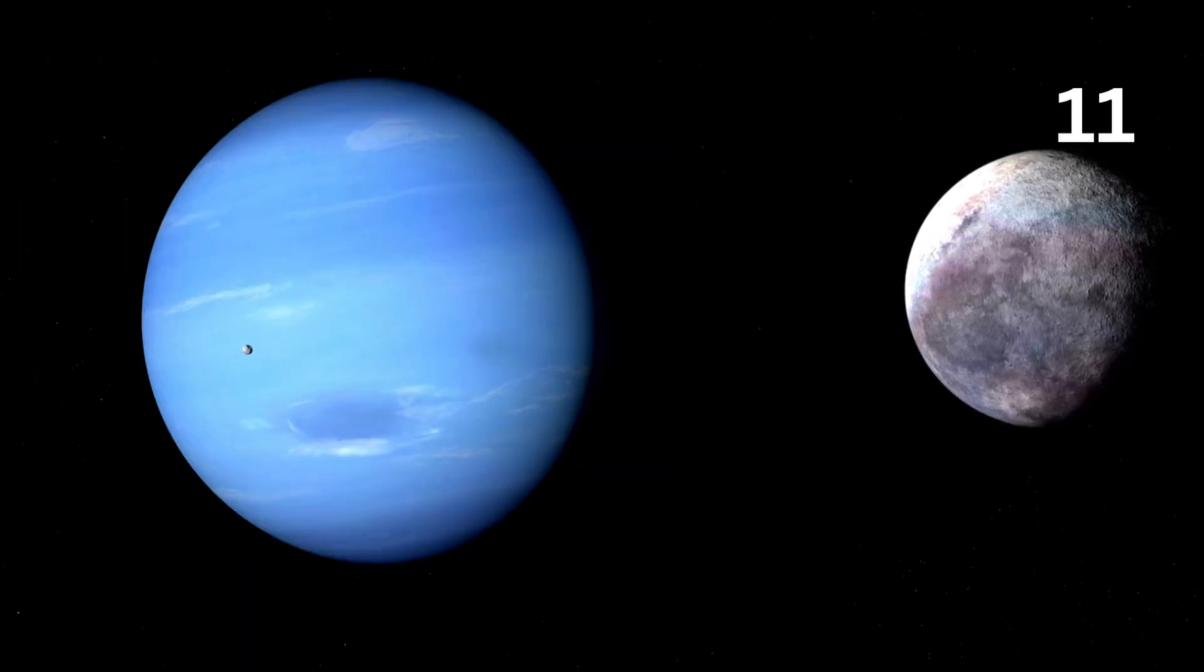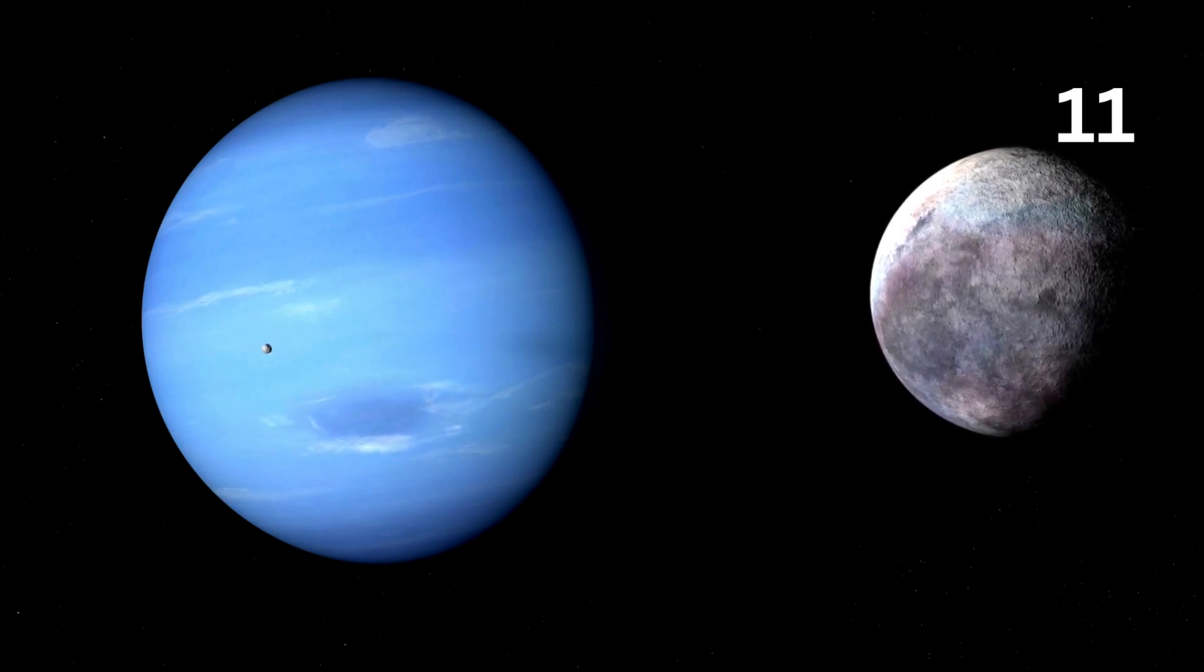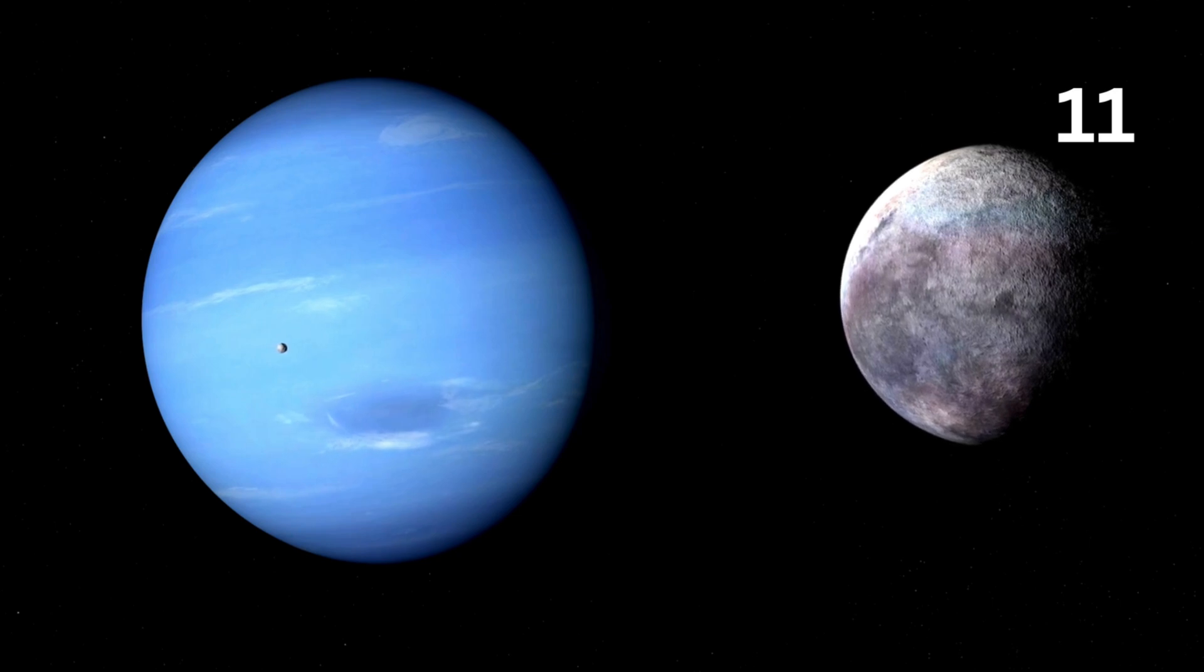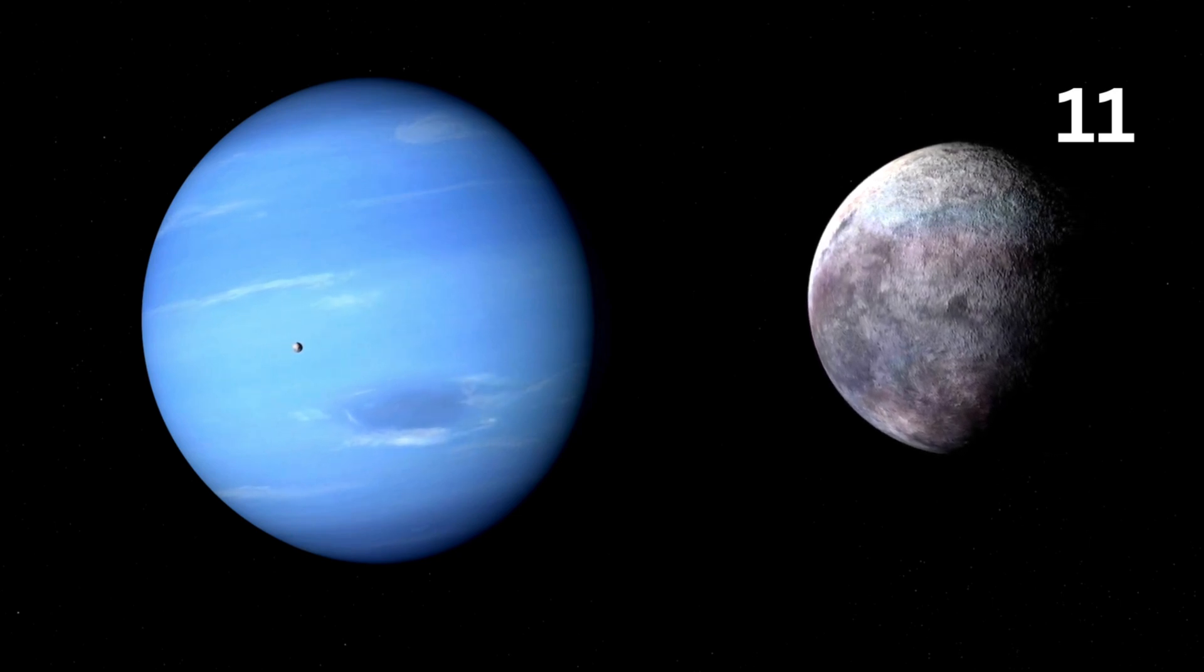We're at fact number 11 already. Neptune has a moon called Triton that rotates backwards. It rotates in the opposite direction that Neptune does, and astronomers aren't exactly sure why.